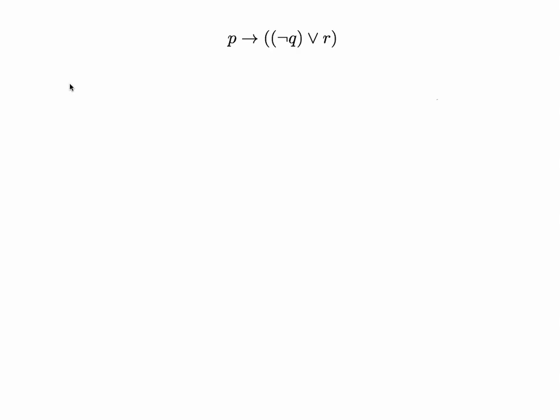In this screencast we're going to take a look at a proposition with three variables in it and try to construct a truth table for it. The proposition is P implies not Q or R.